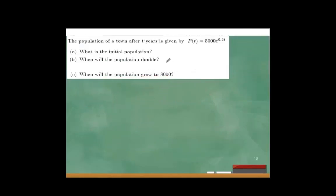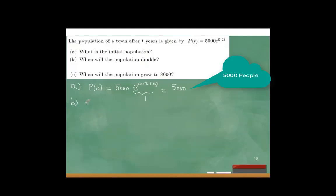A population of a town after T years is given by a formula. Part A: what is the initial population? Setting T = 0, anything to the power of 0 is 1, so the initial population is 5,000. For Part B, when will the population double? We write 2 × 5,000 = 5,000 × e^(0.2T). Dividing both sides by 5,000 gives 2 = e^(0.2T).